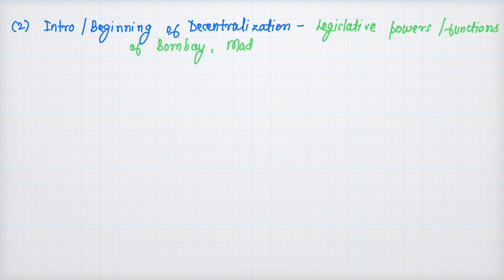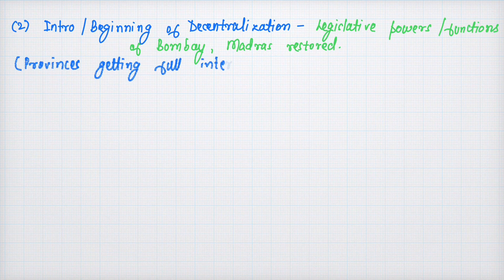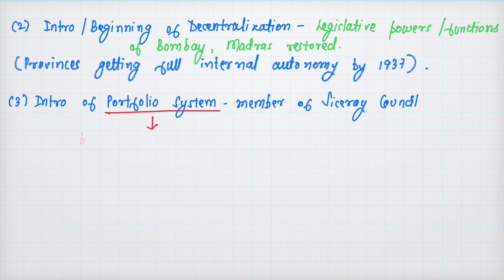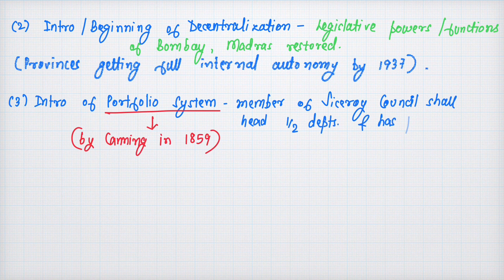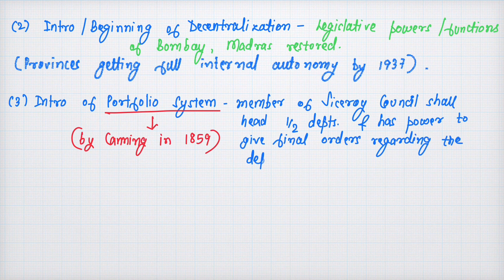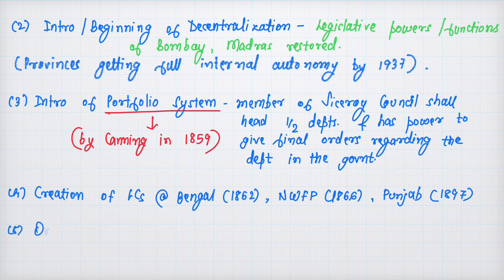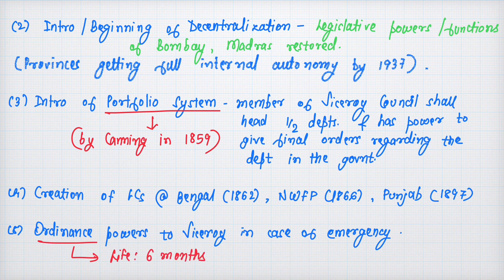There was also the beginning of decentralization — legislative powers of Bombay and Madras provinces were restored. Provinces gained considerable autonomy. The portfolio system was introduced: members of the Viceroy's council would head specific departments and had power to give final orders — done by Lord Canning in 1859. Legislative councils were created in Bengal in 1862, North-West Frontier Province in 1866, and Punjab in 1897. The Viceroy received ordinance powers similar to the President's ordinance power today, with a six-month term.